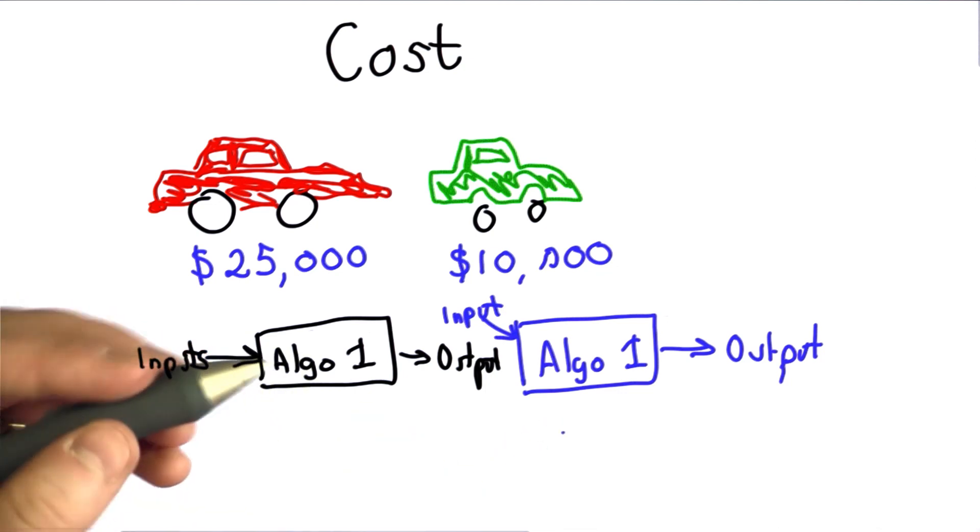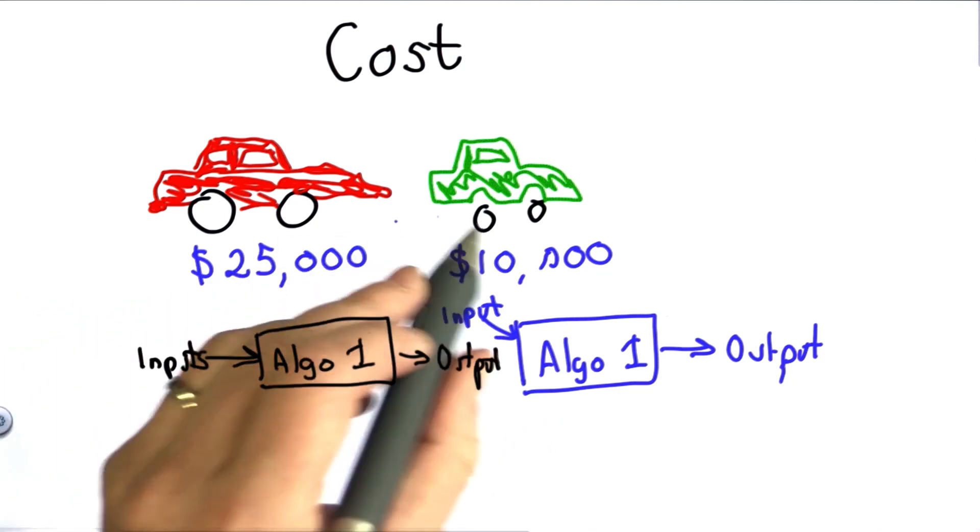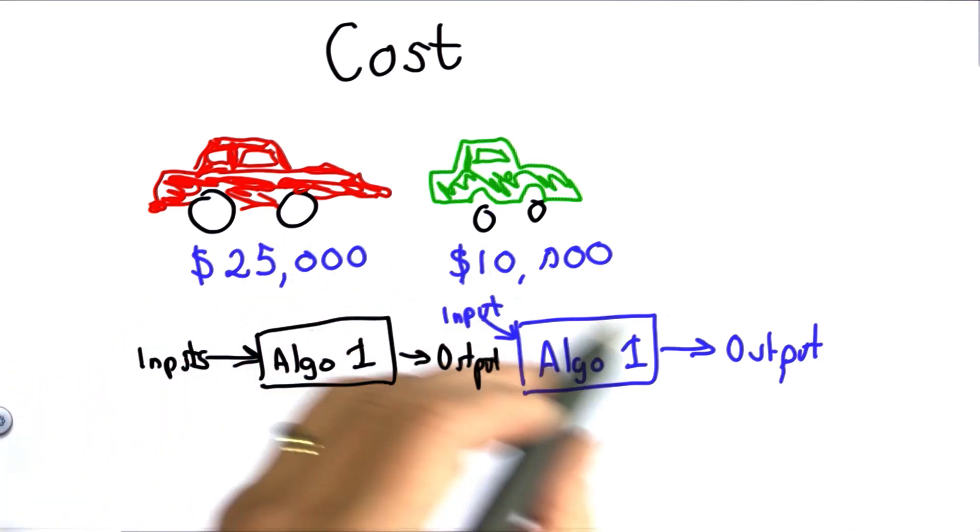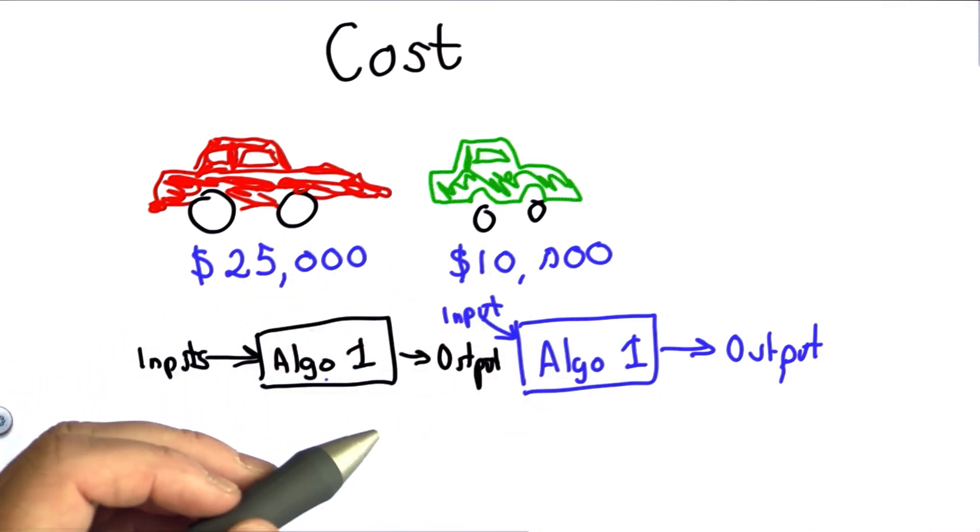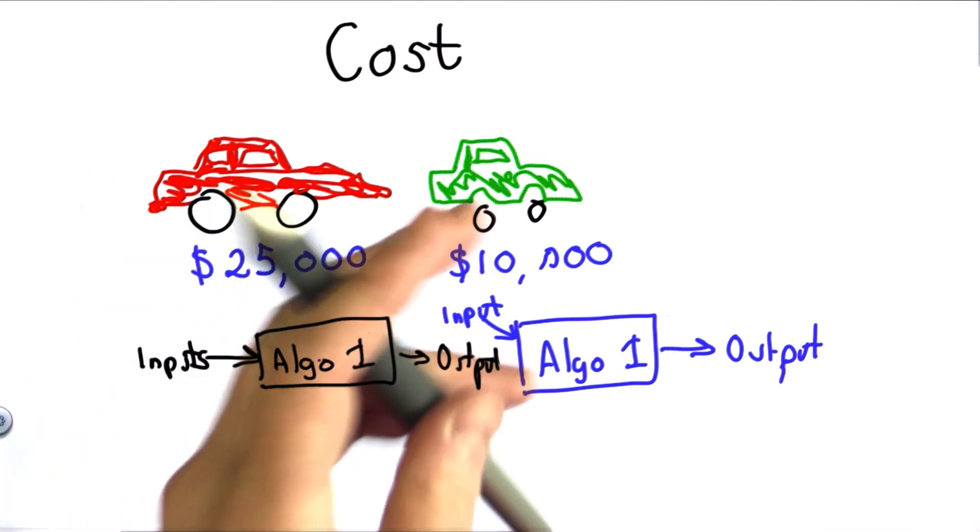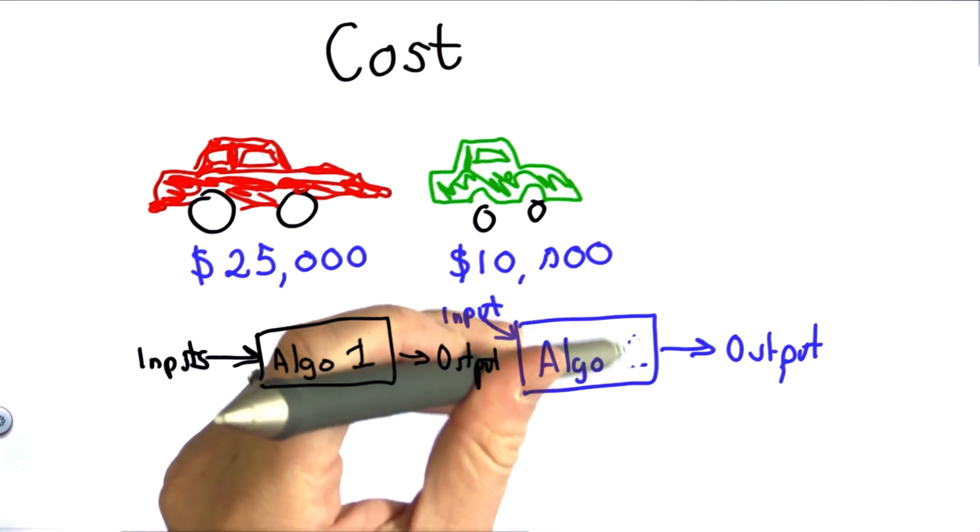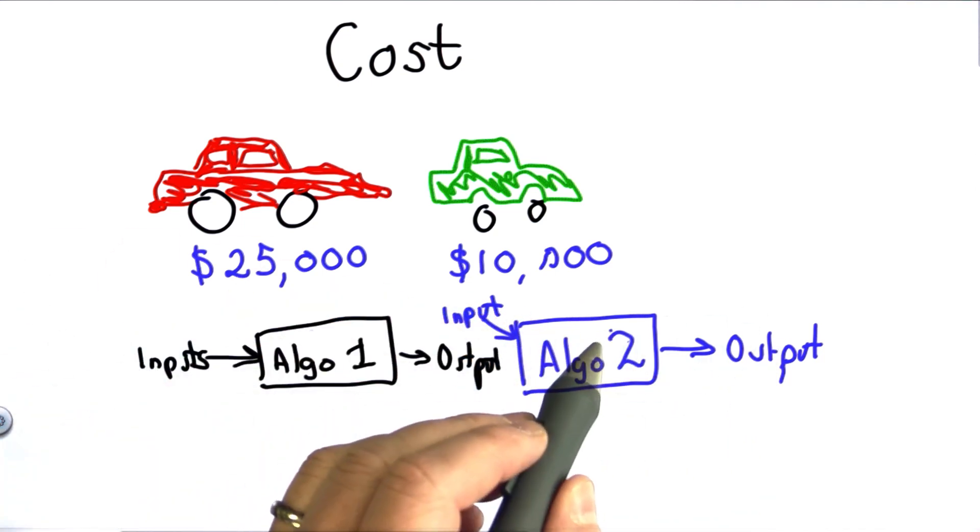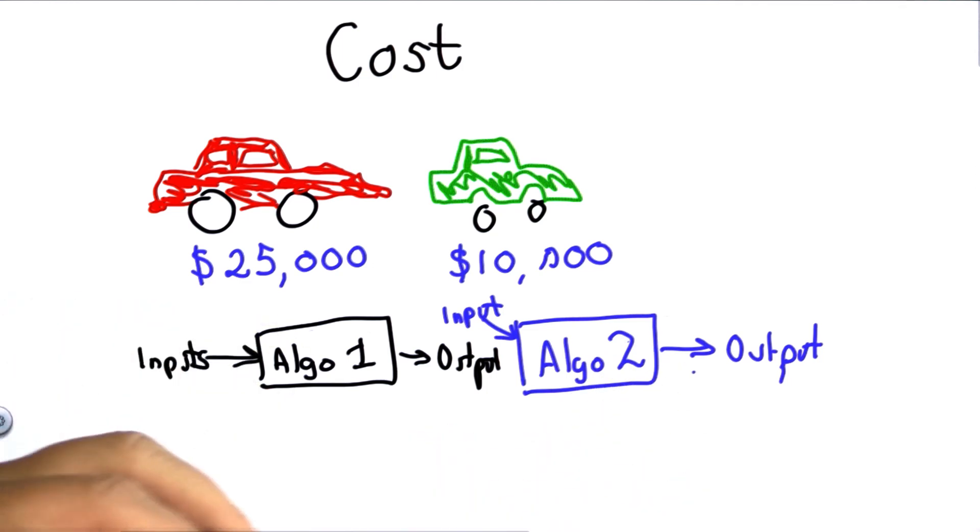And if we want to decide which algorithm is better, well, we don't have a specific cost for the algorithm the way we do for the cars. We can say the red car costs more than the green car. The cost depends on the actual input that we run the algorithm on. So it might be the case for some inputs, algorithm one is faster. And for other inputs, algorithm two is faster. And I should label this algorithm two.